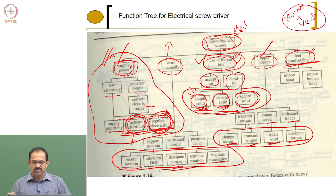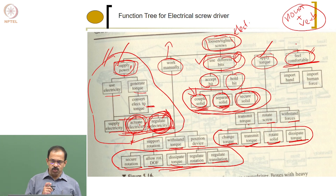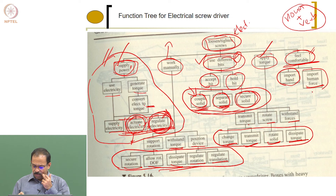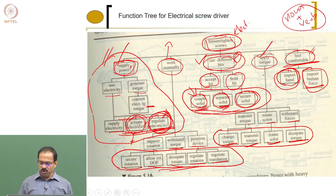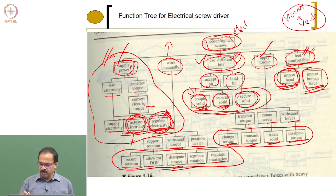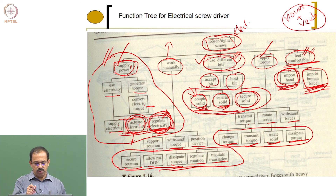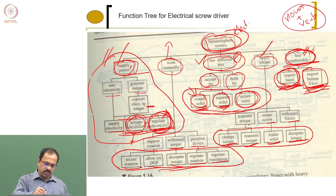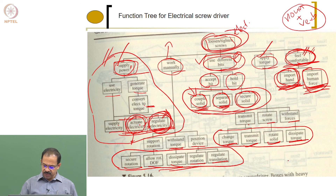Feel comfortable relates to ergonomics. We are holding the tool with our hand, importing human force into the product. These two things — how the hand interfaces with the product and how human force is applied — affect comfortable holding. We decomposed the main function into five critical path functions, each further decomposed, resulting in a complete function tree for the electrical screwdriver.